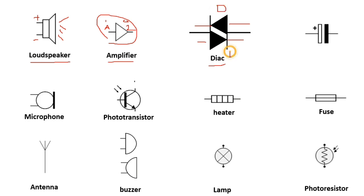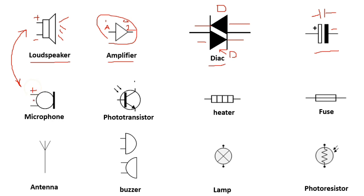Here we have an electrolytic capacitor with plus and minus — this is a polarized or electrolytic capacitor. For the non-polarized capacitor, this is the symbol without any sign. This symbol is for the microphone — the microphone has the same principle as the loudspeaker, with two terminals: plus and minus.